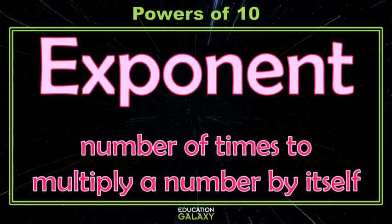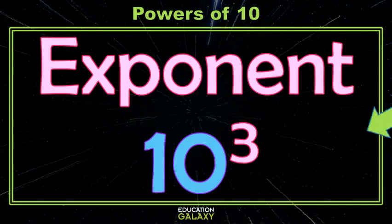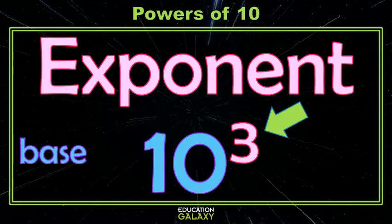Hmm, what does an exponent look like? Well, it looks like a tiny number written to the right and kind of up of our other number. So this little number is called the exponent, and this bigger number is called the base.